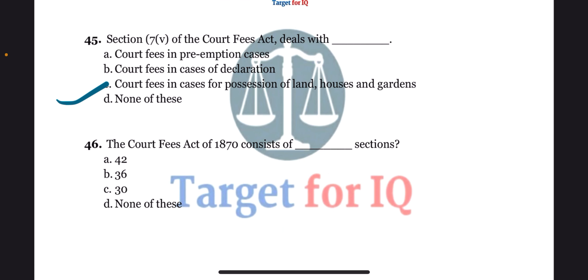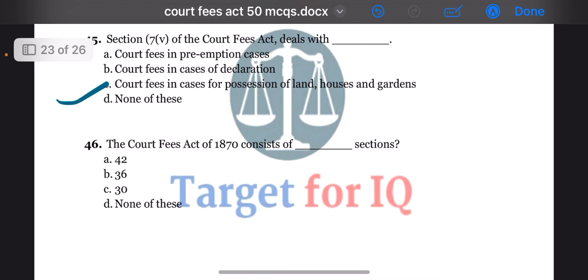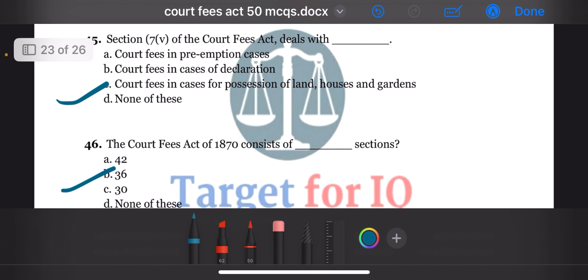Next question: the Court Fees Act of 1870 consists of dash sections. The options are A. 42, B. 36, C. 30, or D. None of these. The correct answer is option B. 36.